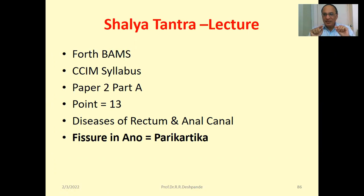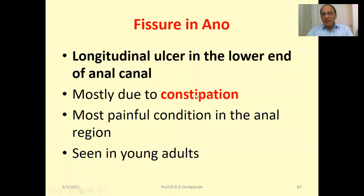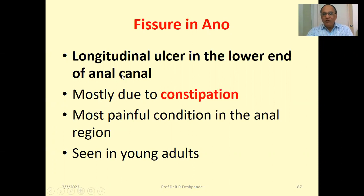Fissure-in-ano — the word 'fissure' means to cut. Around the anal opening there are small wounds. Fissure-in-ano is a longitudinal ulcer in the lower end of the anal canal. Remember: piles is like balls related to dilated veins, but fissure is related to an ulcer. Fissure equals ulcer — don't forget. It is mostly due to constipation.